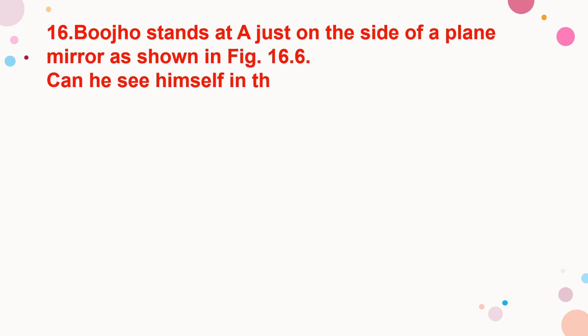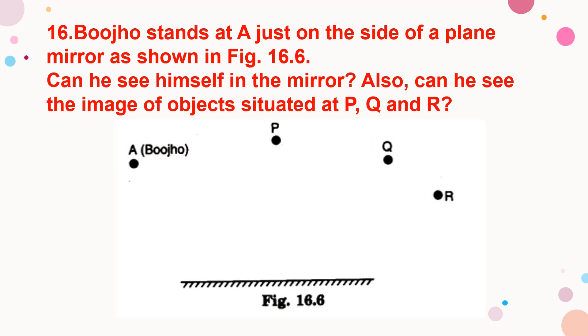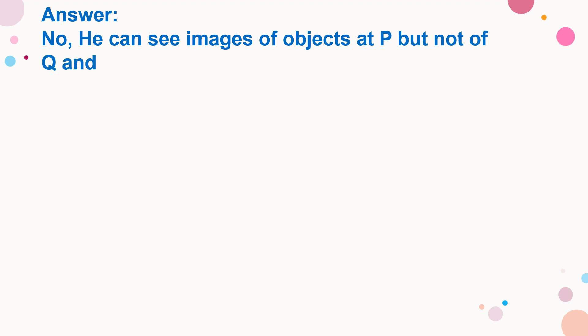Bojo stands at A, just on the side of a plain mirror as shown in the figure. Can he see himself in the mirror? Also, can he see the image of objects situated at P, Q, and R? Here Bojo stands at A on the side of the plain mirror. He can see images of an object at P, but not of Q and R.